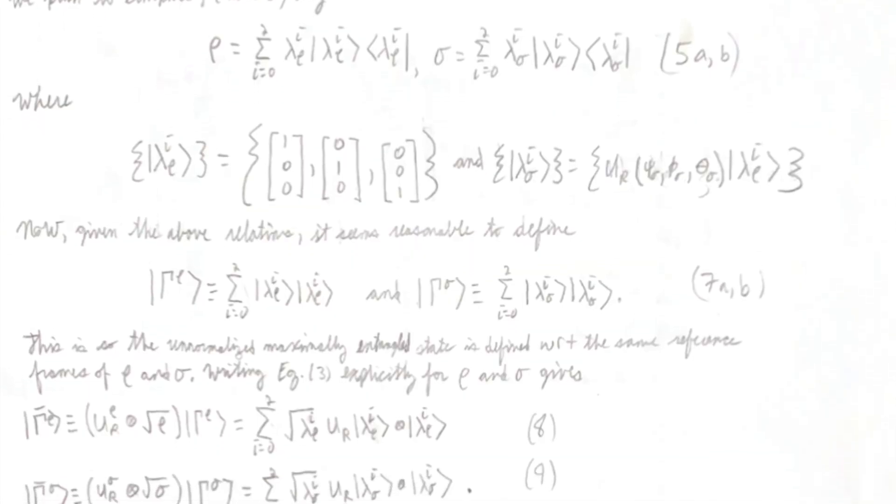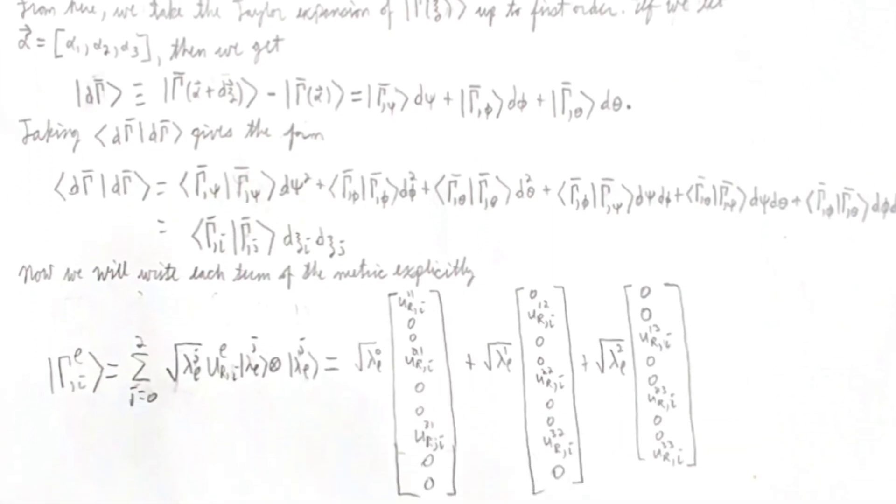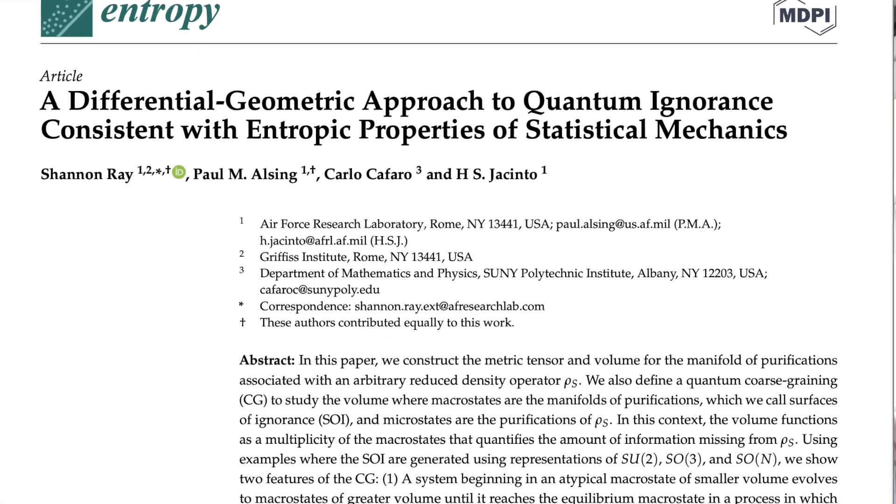The purpose of this video is to explain why entropy implies symmetry and symmetry implies entropy. This isn't a rigorous formulation — it is merely my thought process and how I build intuitions for the type of calculations that I do. My process is to think conceptually and build intuition, then verify it's correct by doing a calculation. That is precisely what I did in my paper, A Differential Geometric Approach to Quantum Ignorance Consistent with Entropic Properties of Statistical Mechanics. I had this intuition about symmetry and entropy: more information means less symmetry, less information means more symmetry. That was the entire intuition I built.